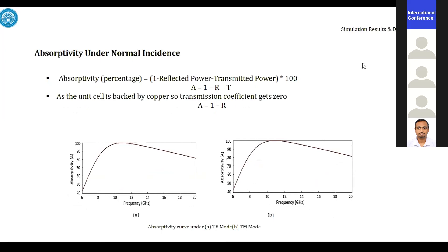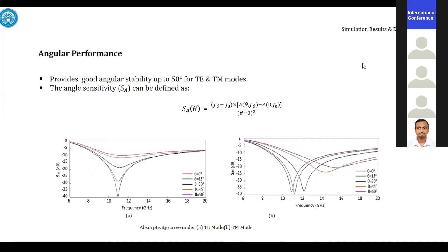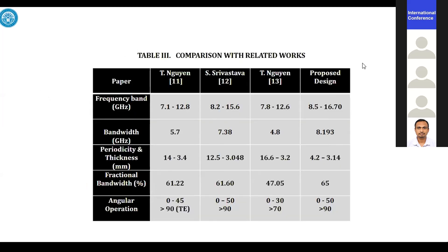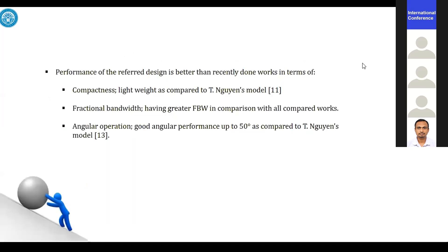This is the absorptivity of our structure, and we can see that in the required frequency band it is about 90%. For angular performance, the figures show the angular performance in TE and TM modes. The absorption of the constructed structure is stable up to 50 degrees in both modes. The comparison table shows that the proposed design is better than recently published works in terms of compactness, fractional bandwidth, and angular operation. It is lightweight compared to other designs, has the greatest fractional bandwidth of all compared designs, and its angular operation is better than competing models.